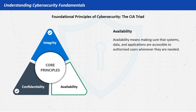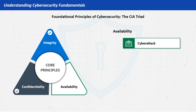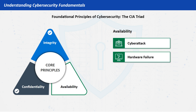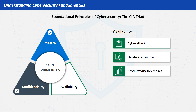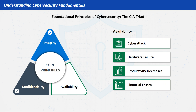Availability means making sure that systems, data, and applications are accessible to authorized users whenever they are needed. Availability is essential for keeping operations running smoothly for both individuals and organizations. If systems go down because of a cyber attack, like ransomware, or a hardware failure, productivity decreases and both individuals and the organization may face operational or financial losses. Maintaining availability means that both individuals and organizations can function smoothly, with access to the tools and information they need without interruption.